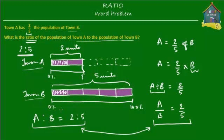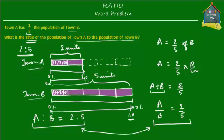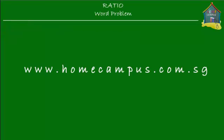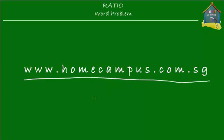Second, if the population of Town B is considered as the decimal number 1.0, with 0.0 as the starting point, then what is the population of Town A equal to as a decimal? That's it for this word problem. Hope you understood it and will go do the homework. Check out www.homecampus.com.sg for more word problems. Bye-bye.